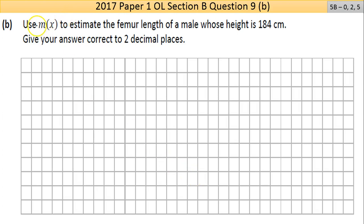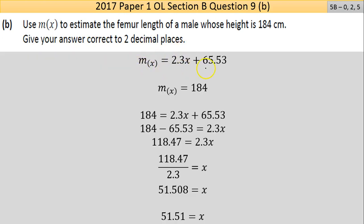Part B says use the male function m(x) to estimate the femur length of a male whose height is 184 centimeters. Give your answer to two decimal places. I have my male function and I'm told that m(x) equals 184 centimeters. So I can set 184 = 2.3x + 65.53. Bringing 65.53 across gives 184 - 65.53 = 2.3x, which is 118.47 = 2.3x. Dividing by 2.3 gives x = 51.508.